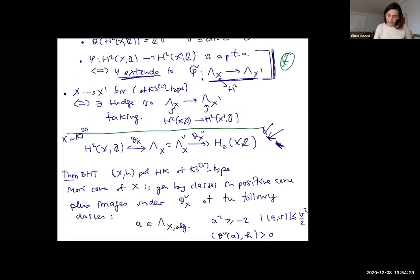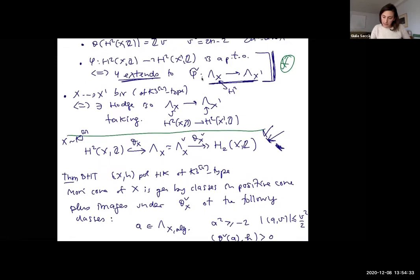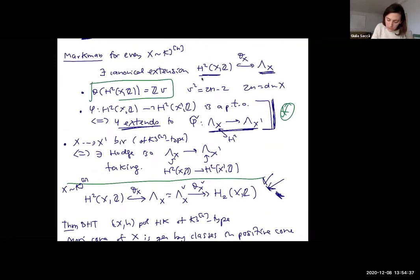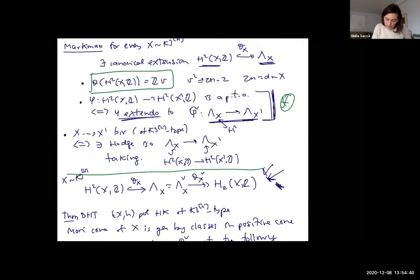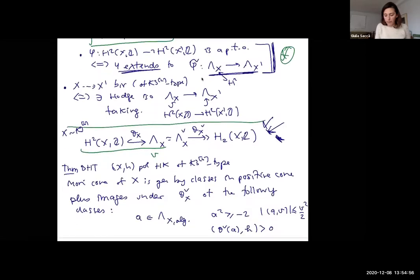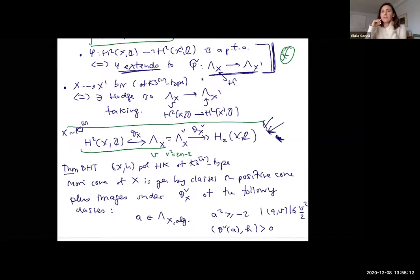V in this theorem is the primitive generator of the orthogonal complement — well-defined up to sign, with this square. In the case of a moduli space, V is the Mukai vector. In the general case, it's the primitive generator of the orthogonal complement of H2 of X inside the extended lattice. The lattice extension I described is in some sense obtained by deforming this thing from the moduli space case. When you move along a parallel transport operator, the V of an arbitrary K3^[n] manifold will go to this V.